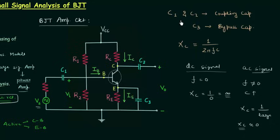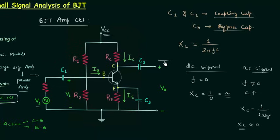C1 and C2 are called coupling capacitors because C1 couples the previous stage with this circuit and C2 couples the next stage with this circuit. They are important because we do not want DC voltage from adjacent stages to interfere with the DC biasing voltage, which would change the operating point. The DC signal sees C1 and C2 as infinite resistance, so it does not interfere with VCC, keeping the operating point constant.